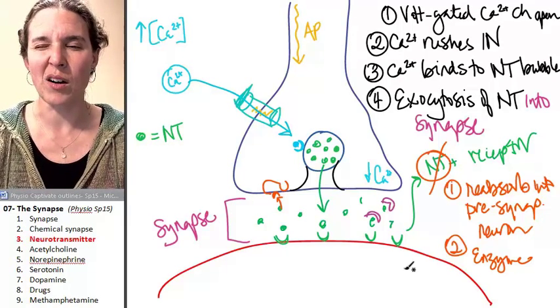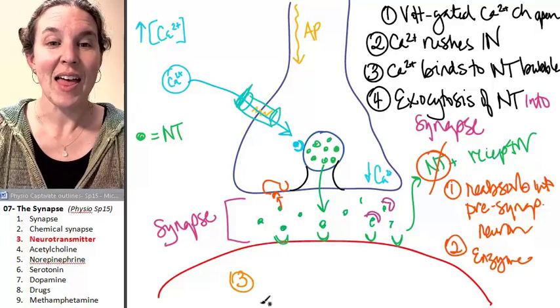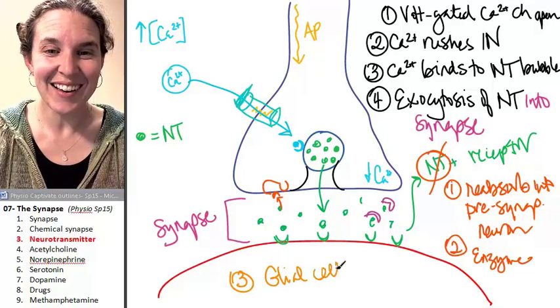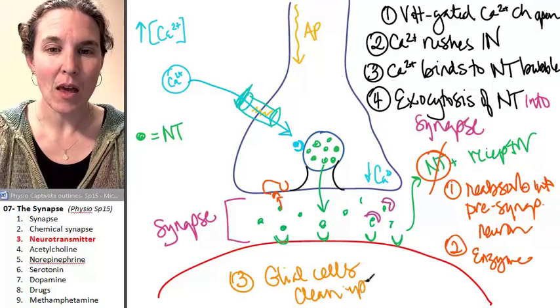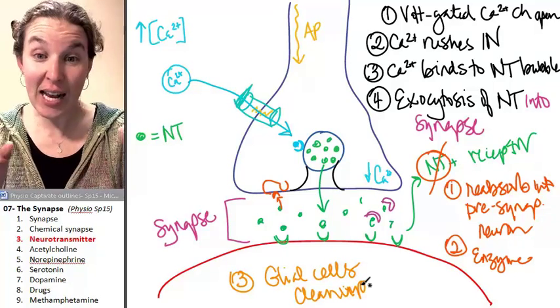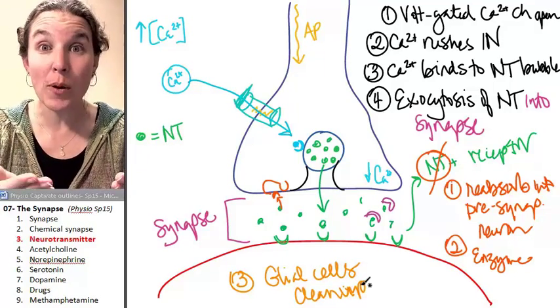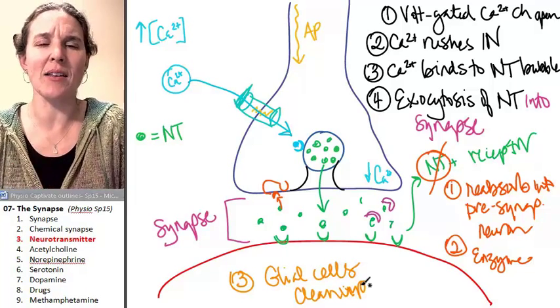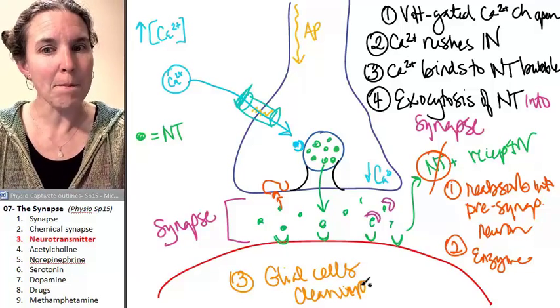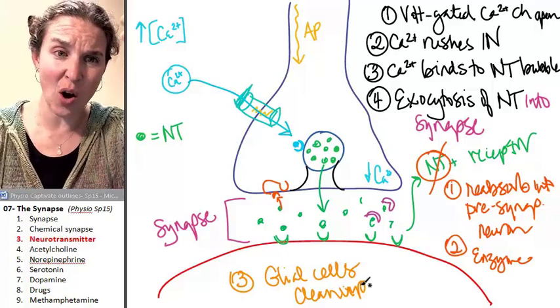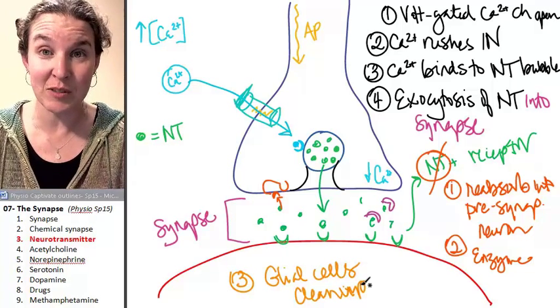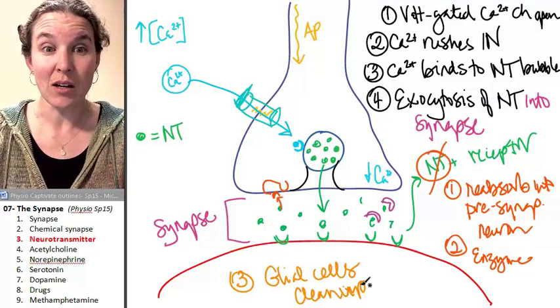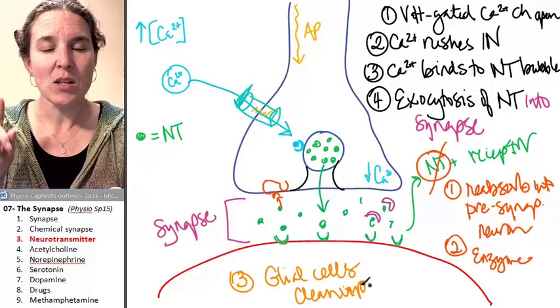We can also, there's one more. The glial cells can actually clean up. The astrocytes, the microglia, they can actually come along and help remove neurotransmitter from the synapse. That's one of the reasons why we say the neuron, the star of the show. But glial cells, there's 90% of all of your neural tissue is made up of glial cells. They're probably pretty important. And the act of removing neurotransmitter, that's a really important job.